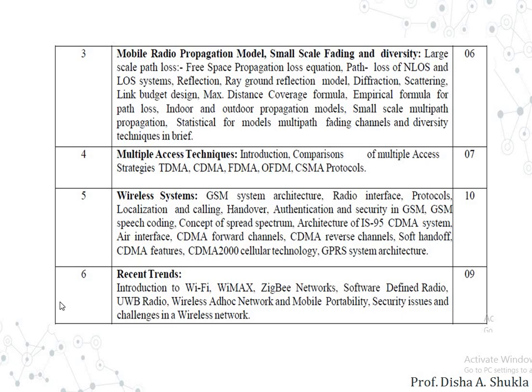The next chapter discusses the wireless systems we have — the GSM system architecture, radio interference, protocol localization and calling, handover, authentication and security in GSM, GSM speech coding, concept of spread spectrum and its different technologies — direct sequence and frequency hopping — architecture of IS-95 CDMA system, air interface, CDMA forward channel, CDMA reverse channel, soft handoff, CDMA features, and the GPRS system architecture.